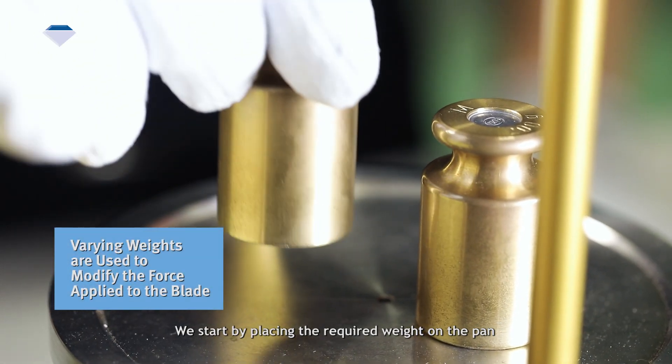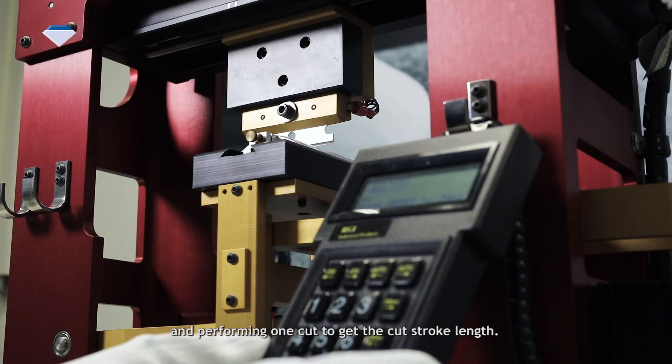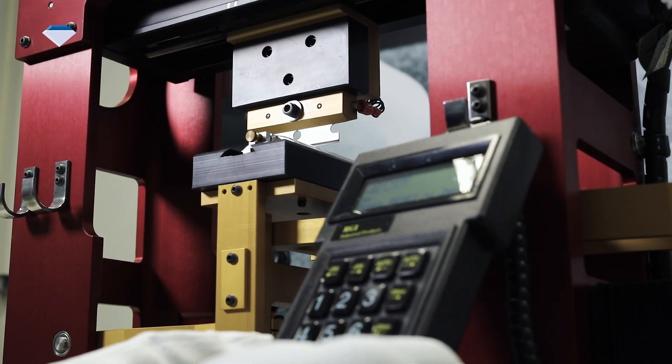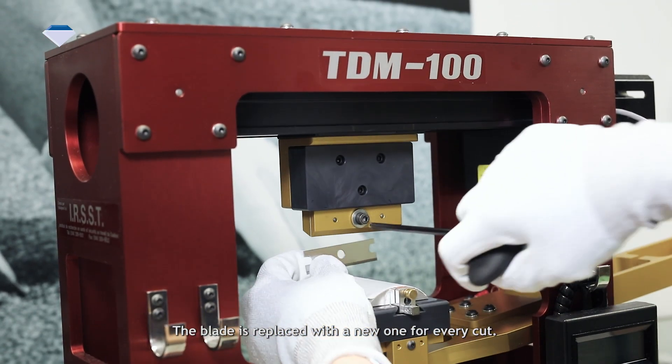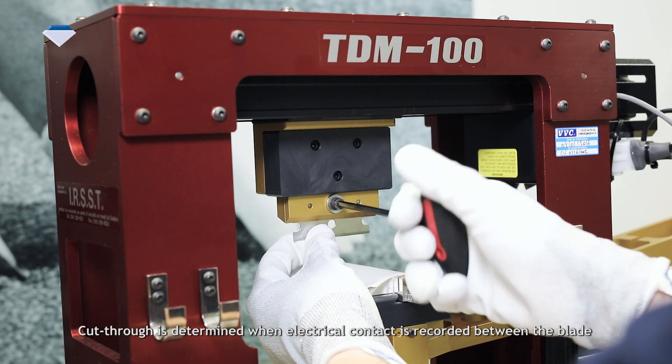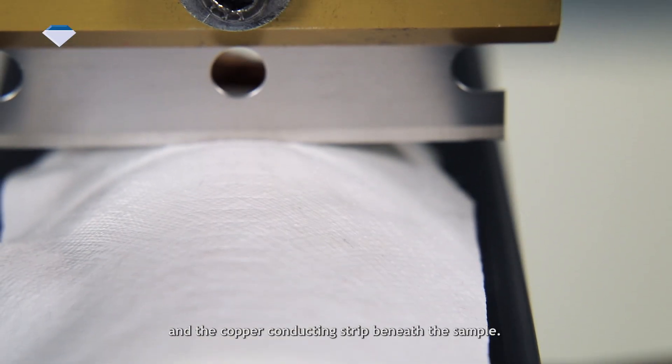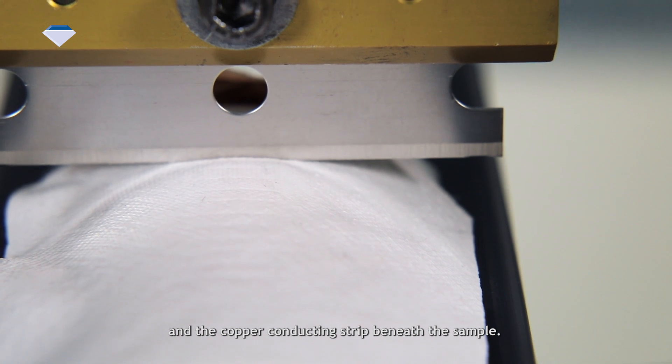We start by placing the required weight on the pan and performing one cut to get the cut stroke length. The blade is replaced with a new one for every cut. Cut-through is determined when electrical contact is recorded between the blade and the copper conducting strip beneath the sample.